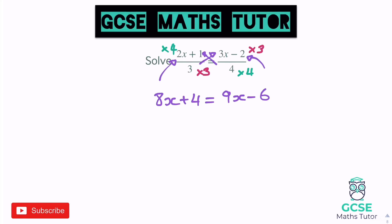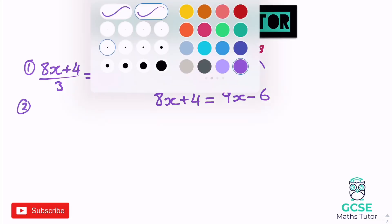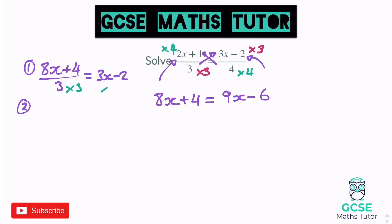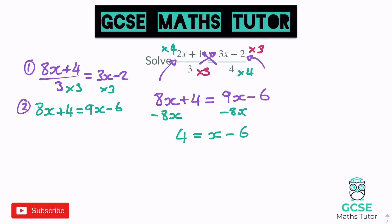You could have done that in two steps: times the left by 4 first to get 8x plus 4 over 3 equals 3x minus 2, then times both sides by 3, which would leave you with 8x plus 4 equals 9x minus 6, like we've got here already. Cross-multiplying is just a little bit faster. So from here, take the same approach — get rid of the smallest x, so minus the 8x, and that leaves us with 4 equals x minus 6. Add the 6 to both sides, you get 10 equals x, so our final answer is x equals 10.